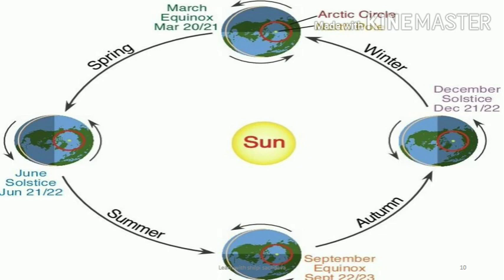The Northern Hemisphere has the Tropic of Cancer and the Southern Hemisphere has the Tropic of Capricorn. During this time, when the North Pole or Northern Hemisphere is facing the sun, the Southern Hemisphere is on the opposite side and receives the slanting rays of the sun. Thus, the duration of daylight is short and it is winter season in the Southern Hemisphere.